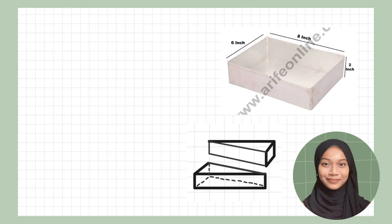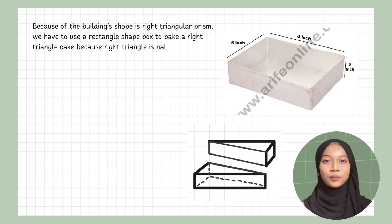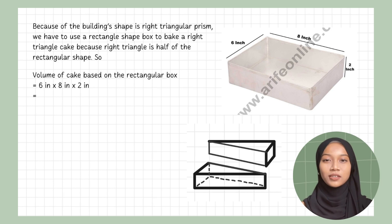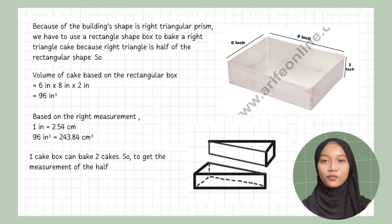For the cake: because the building shape is a right triangular prism, we have to use a rectangular box to fit a right triangle cake, since a right triangle is half of a rectangular shape. The volume of the cake based on the rectangular box is 6 inches times 8 inches times 2 inches, which equals 96 cubic inches. Based on the right measurement, 1 inch equals 243.84 cubic centimeters. One cake box can make 2 triangular cakes.